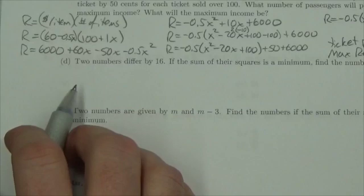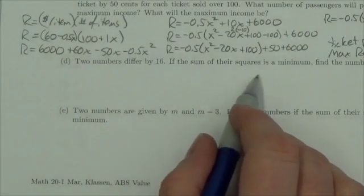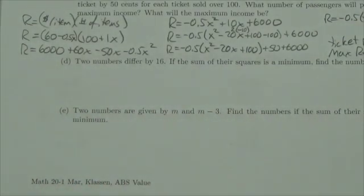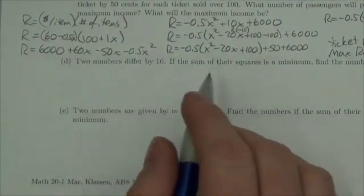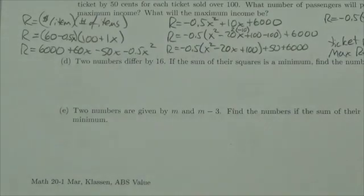Two numbers differ by 16. If the sum of their squares is a minimum, find the numbers. I know this sort of question tends to be a little confusing for people. It's hard to kind of read through that, get your head wrapped around what's going on. The trick is to just do it slowly.